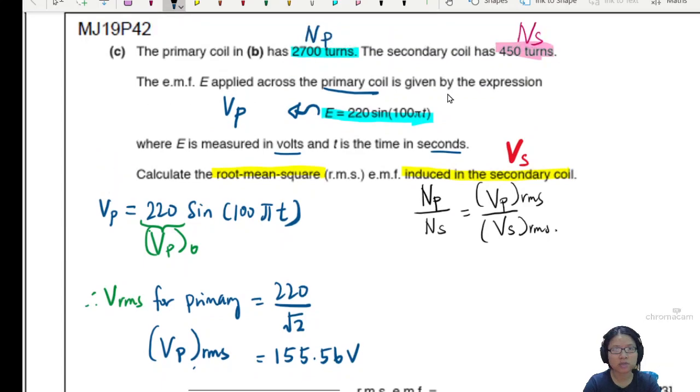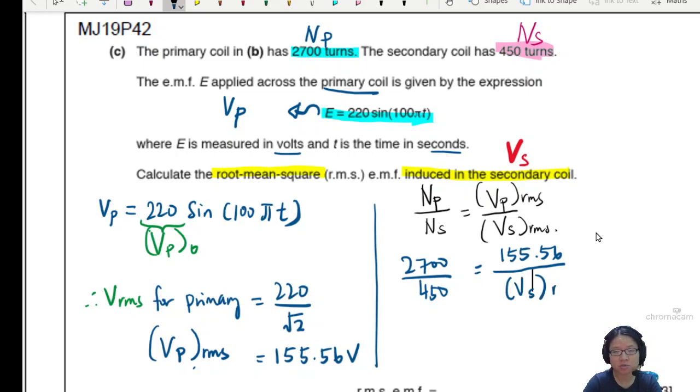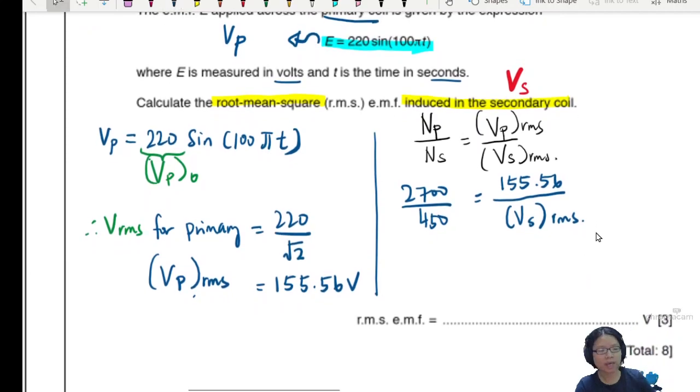The primary coil consists of 2700. The secondary coil is 450. Let me draw a vertical line here to separate them. The primary RMS is 155.56. If you want to be more accurate, you put the whole thing inside 220 over root 2. We are looking for VS secondary coils RMS. So we have the numbers now. We can plug it in and press our good friend the calculator. 155.56 times 450 divided by 2700. So this secondary coil RMS will be equal to 25.93 for me. So it's 25.9 volt. And if you want to, you can write 26. 2 to 3 SF.